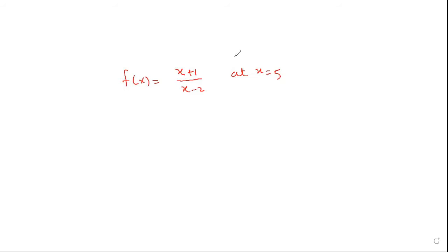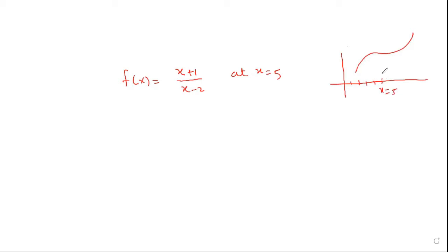There are different terms here: function, slope, and tangent. The function is the rational expression given in the variable x. Slope is the rise over run of a straight line. Since this is a function, it will form a curve. When x is five, we approach the curve and draw a tangent line — a line that touches the curve at that point.